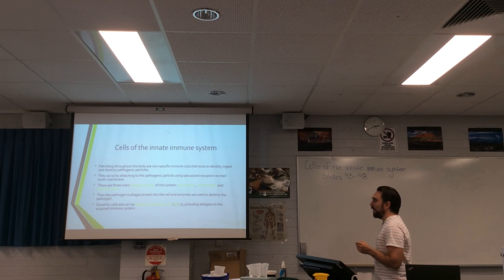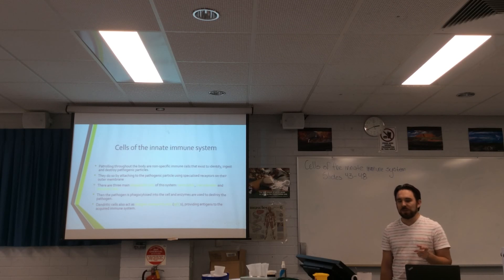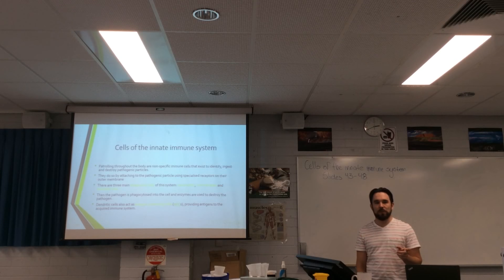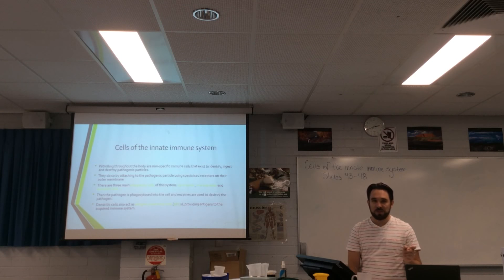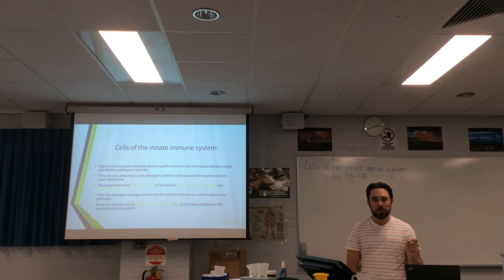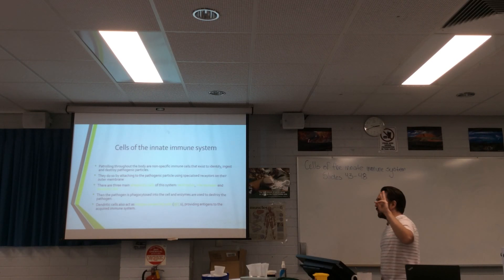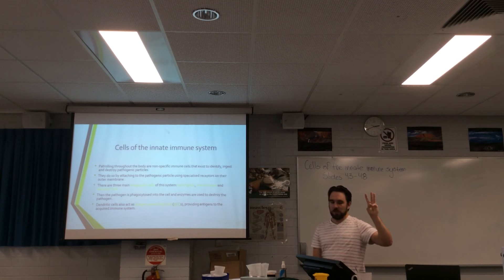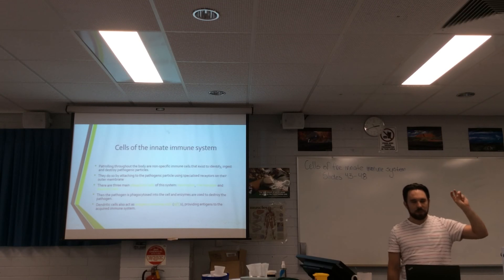There are three main phagocytic cells. A phagocytic cell is a cell that undergoes phagocytosis — a process where it ingests things. Specifically, it's looking for viral particles, bacterial cells, and potentially multicellular organisms and parasites. The three main phagocytic cells of the innate immune system are neutrophils, macrophages, and dendritic cells.